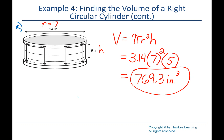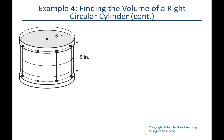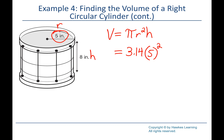Part B is a tom drum — same formula since it's still a cylinder, but this time we're given the radius directly. So: 3.14 times 5 squared times 8, which gives 628 cubic inches.